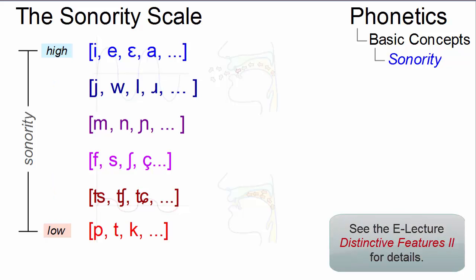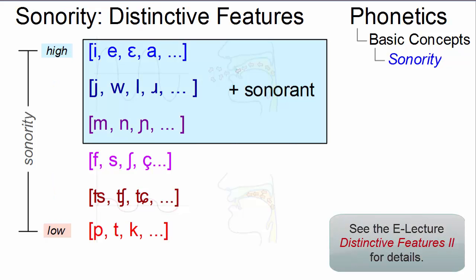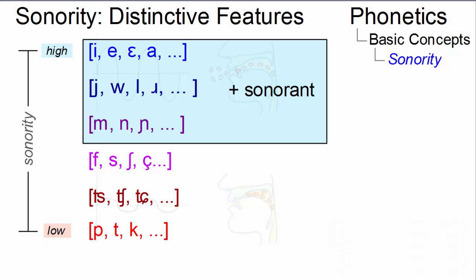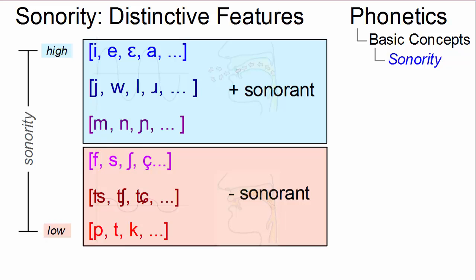Using distinctive features, we define vowels, approximants, and nasals as plus sonorant, and fricatives, affricates, and plosives as minus sonorant. Furthermore, sonorant is a major class feature.